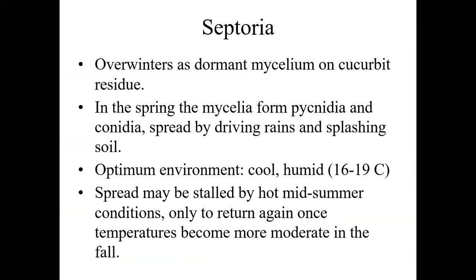Septoria likes cool and humid conditions. What we might see in a given year is that it gets started with a little bit of foliar symptoms when the weather is cool and humid. Then during hot summer with rapid vine growth, you're not seeing the foliar symptoms at all. Once temperatures return to more moderate conditions in the fall, that's when you start to see the fruit lesions appearing — they've been there for a while, just stalled by the hotter weather.